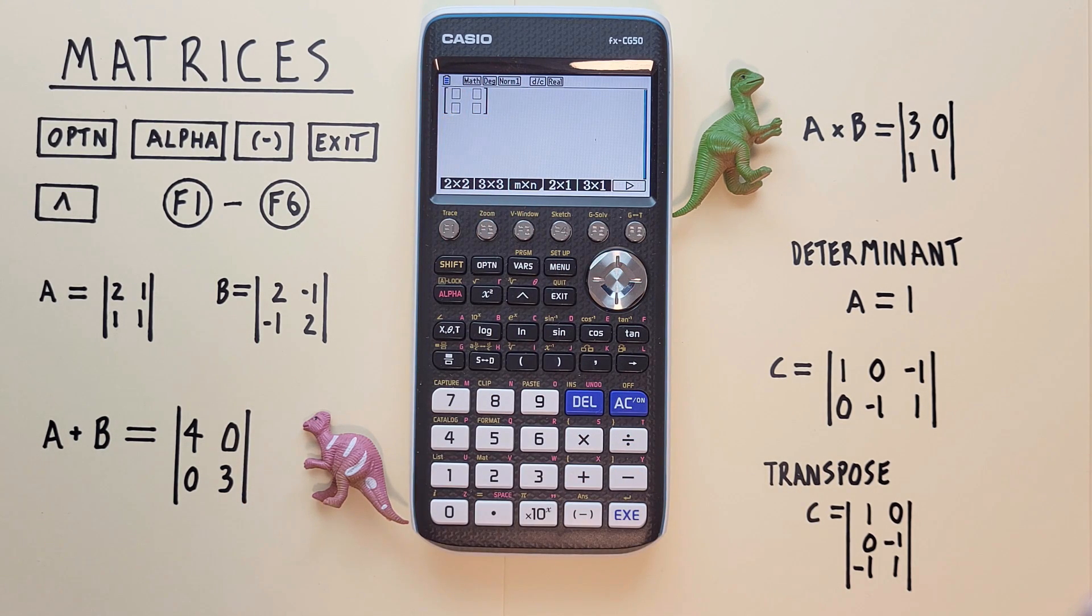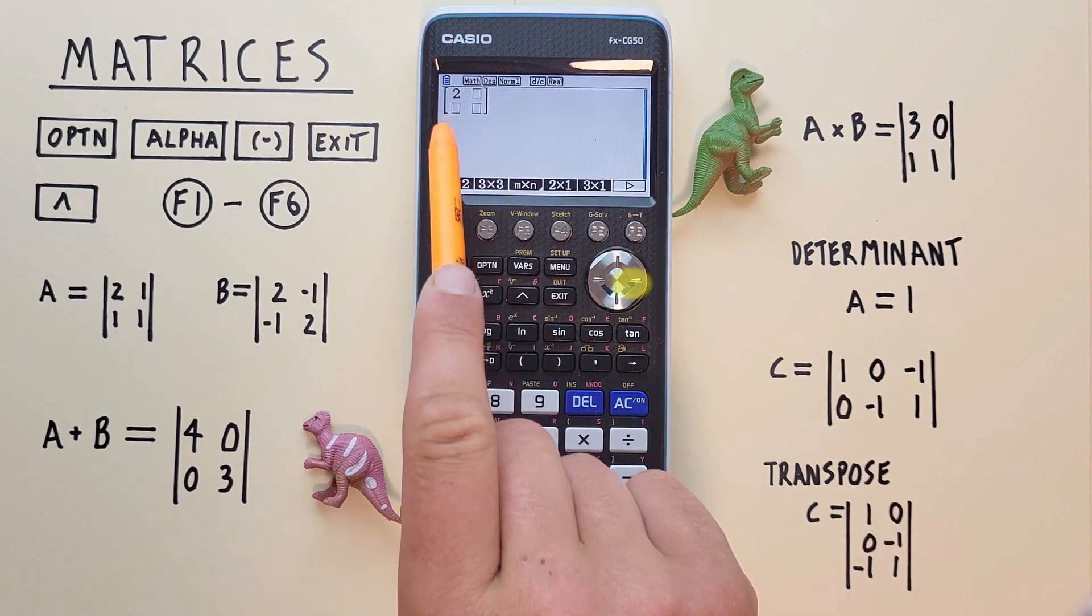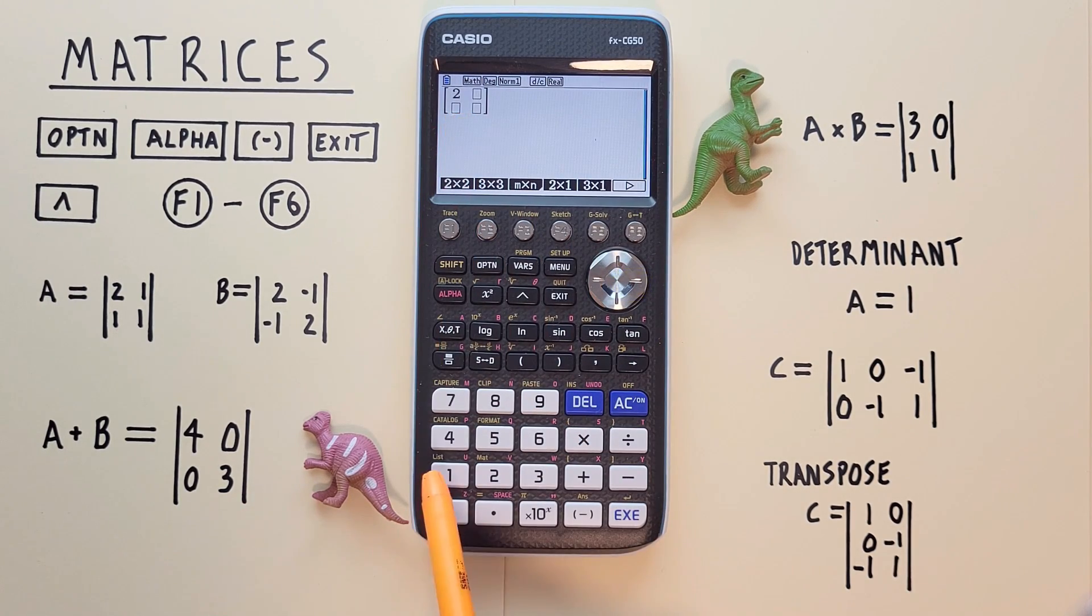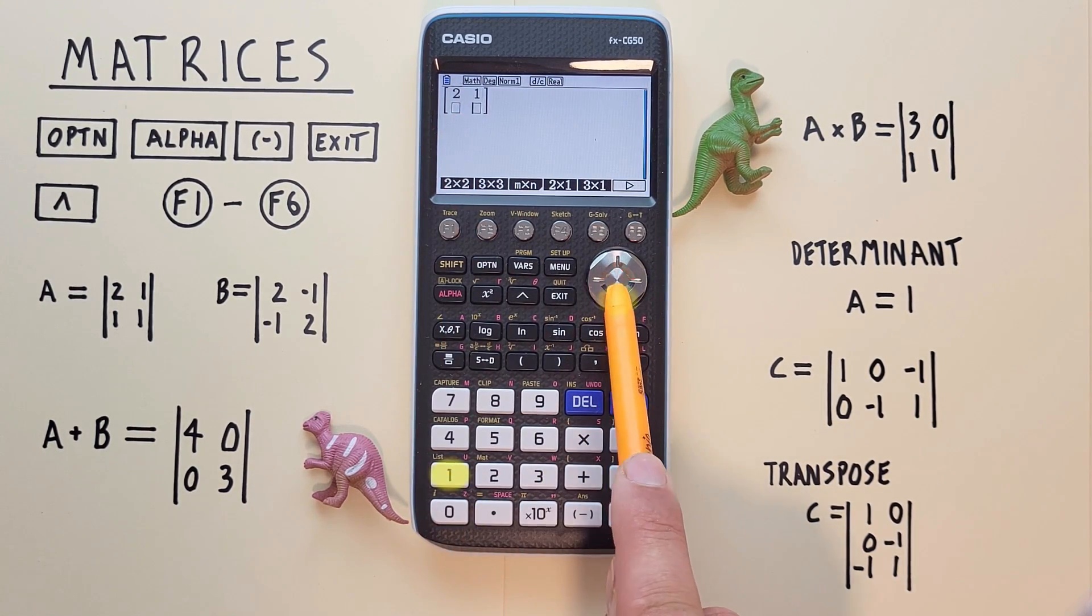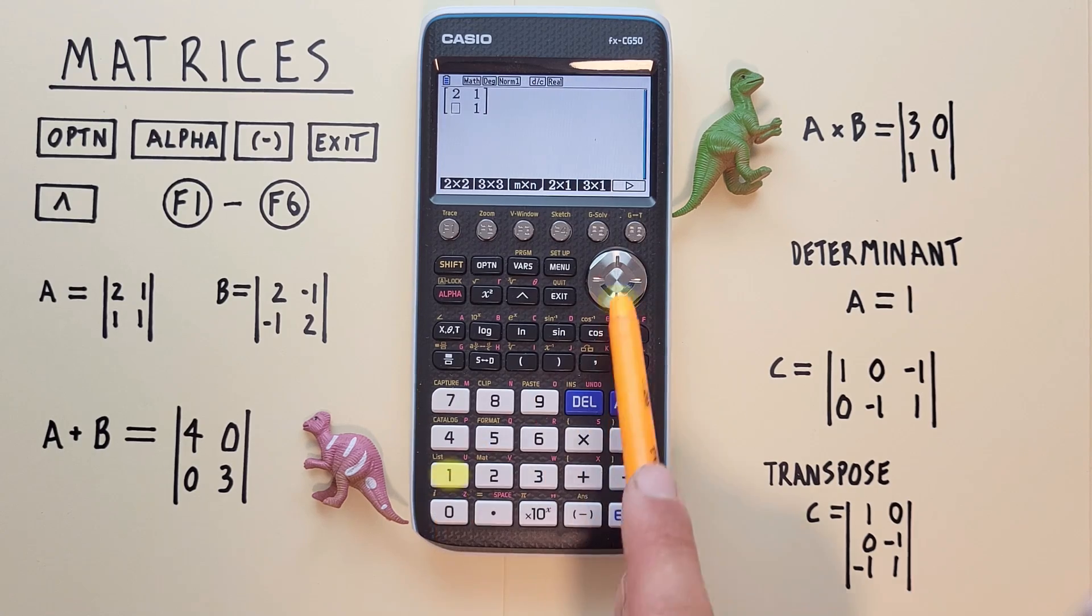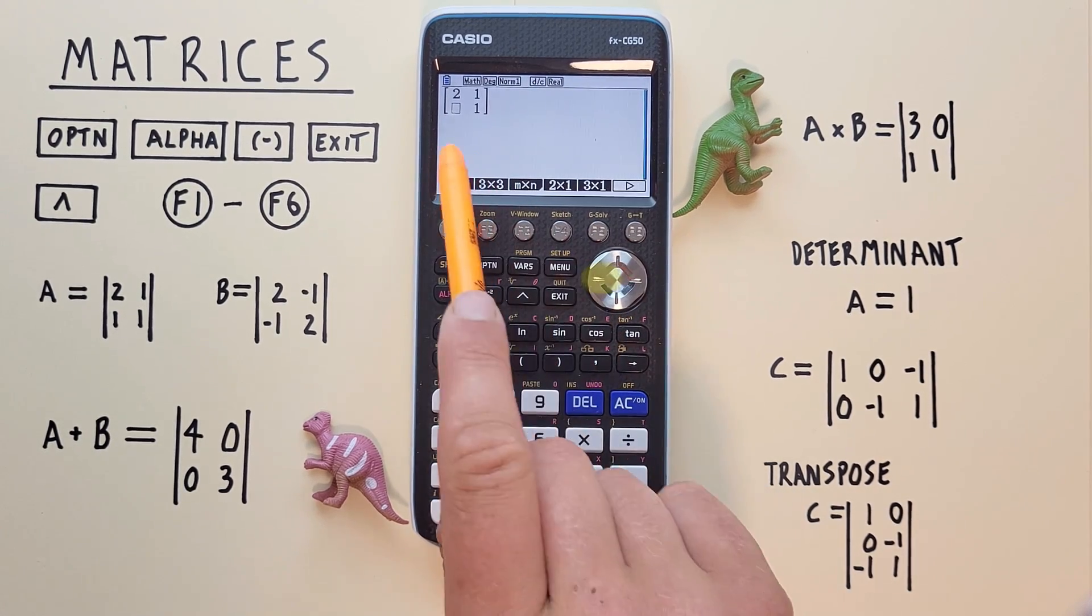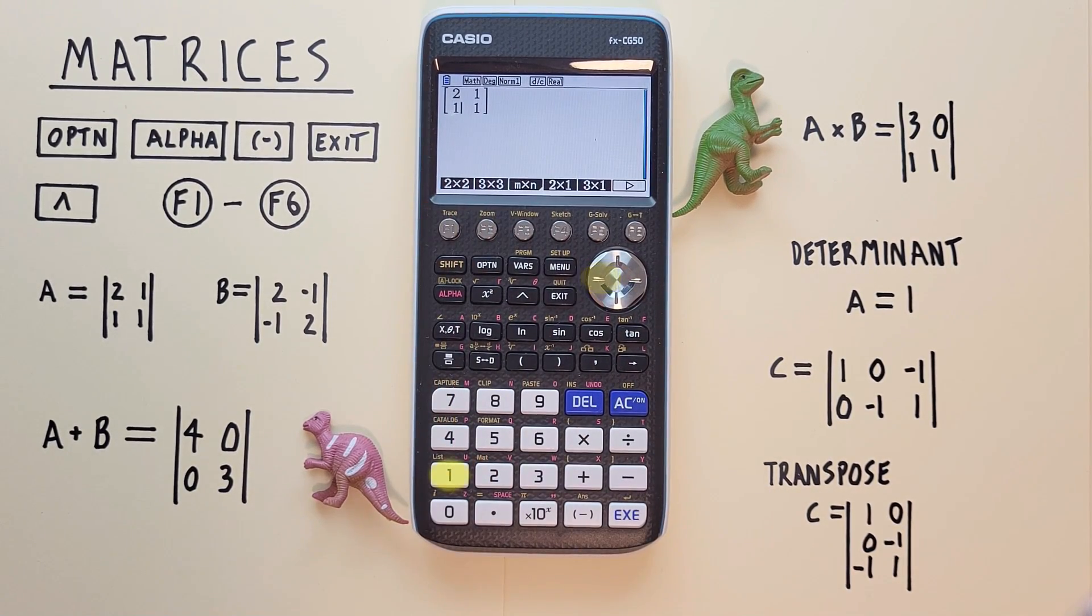We'll start with 2 and then use the arrow, not the EXE key, to scroll over and enter the 1, scroll down, enter the 1, and enter the 1. Now we've entered this A matrix.